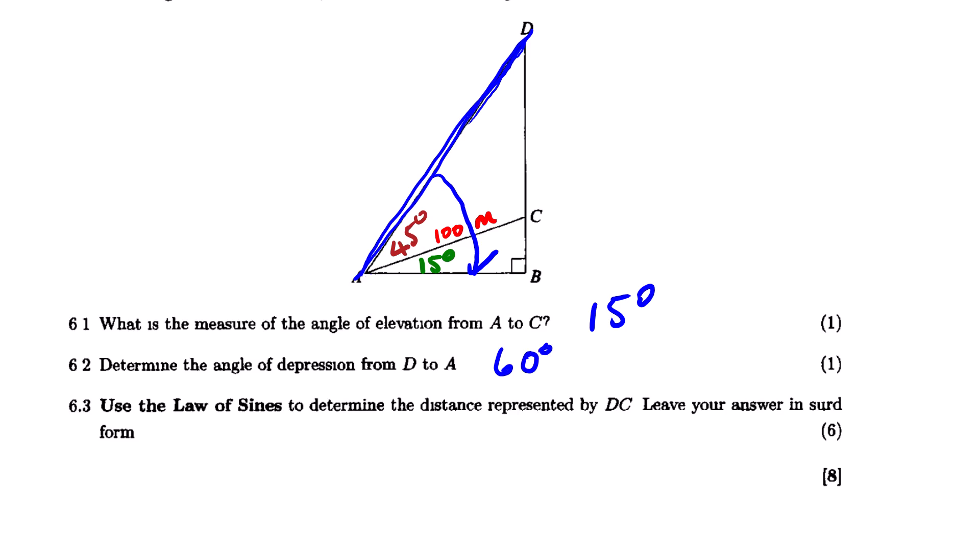And then from there we are looking at 6.3. Use the law of sines to determine the distance represented by DC. Leave your answer in surd form. So we are actually looking for this distance here. Now we need to work out, as you can see we have 6 marks. So let us start with this question.